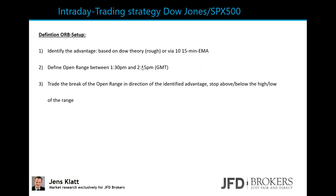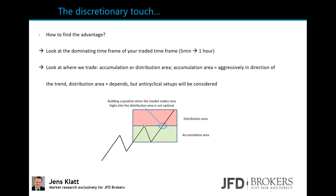You could also formulate a trading setup based on Dow Theory. If you have higher highs and higher lows, you have an uptrend. If the market breaks to new highs, building a position in the distribution area is not optimal. The risk-reward becomes more unattractive. It's far better to go long in a retracement, since you can work with a tighter stop while the upside potential is clearly higher, making the risk-reward more attractive.